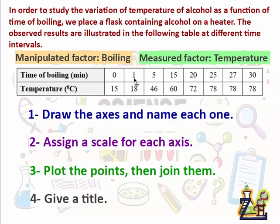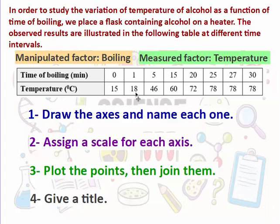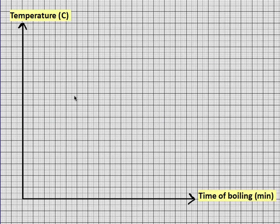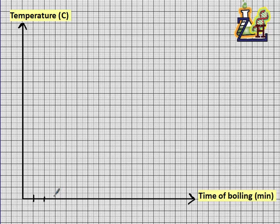Looking at the data, the time values are 0, 1, 5, 15, 20, 25, 27 — increasing by about five minutes each step. The temperature increases differently: 15, 18, 46, and so on. We have to think about the scale carefully. For the x-axis, we assign each box to represent five minutes.